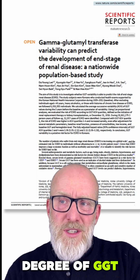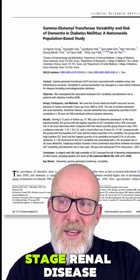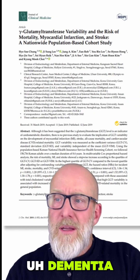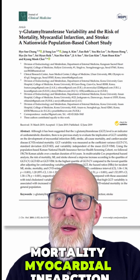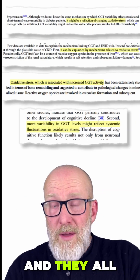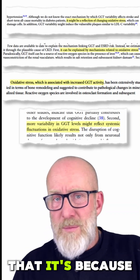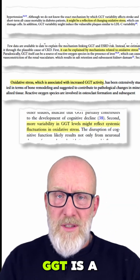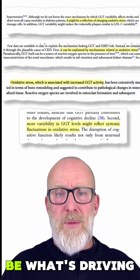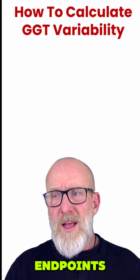All the papers basically say the same thing: the greater the degree of GGT variability, the greater the risk of end-stage renal disease, dementia, mortality, myocardial infarction, and stroke. They all essentially conclude that it's because GGT is a phenomenal marker of oxidative stress, and that may be what's driving all these negative endpoints.